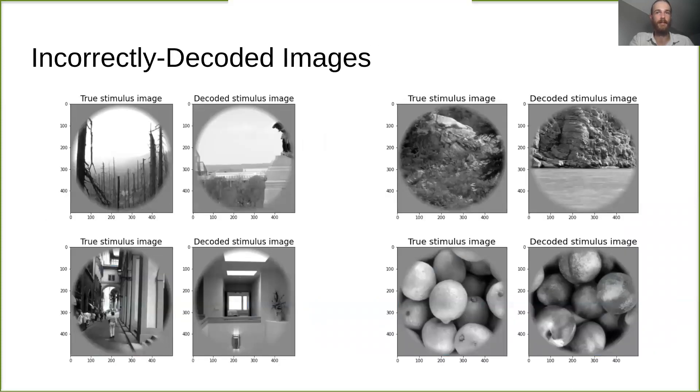Here we have some examples of incorrectly decoded images. Images that are incorrectly identified still tend to have high visual similarity to the true stimulus images.